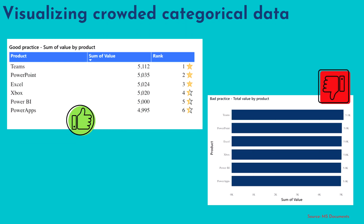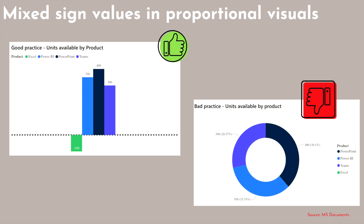For crowded categorical data, using a bar chart doesn't make sense. Instead, use a table or matrix visual where you can list products alongside their values and apply indicators such as rank. Finally, for mixed sign values in proportional visuals: when you have both positive and negative values, avoid the pie chart as much as possible unless it is clearly the best fit. Always try to use a bar chart, where you can show positive and negative values going up and down, and use conditional formatting to generate colors for the visual — that will be the best design for your report.